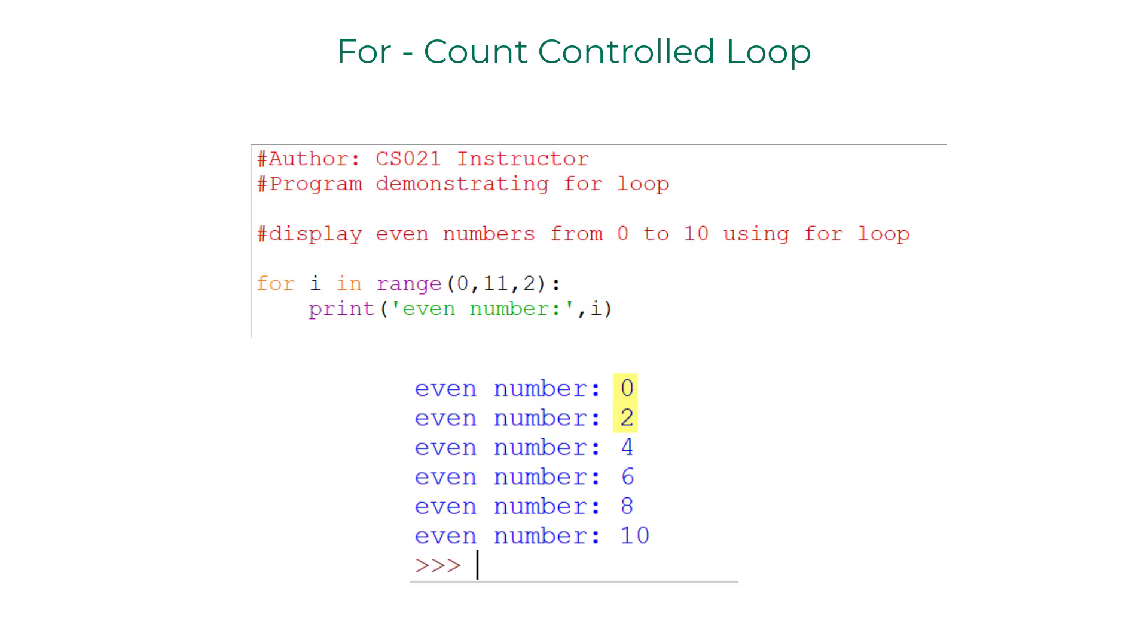In the next iteration it will be 4, 6, 8 and 10. If 2 is added to it, then it will become 12 which is beyond the upper bound. So the program exits the for loop.